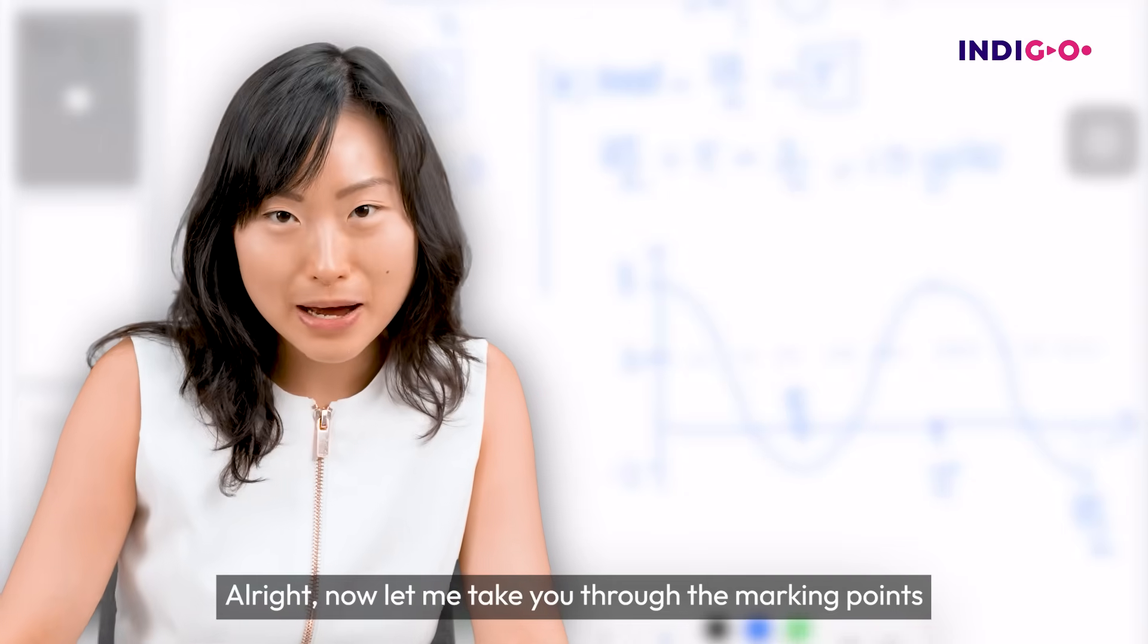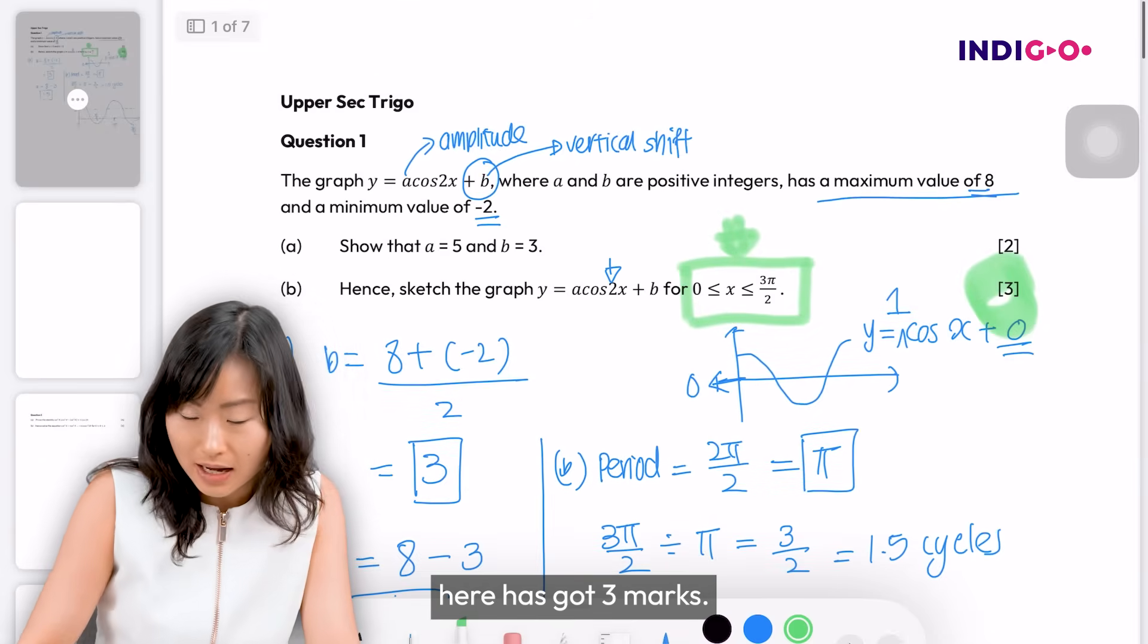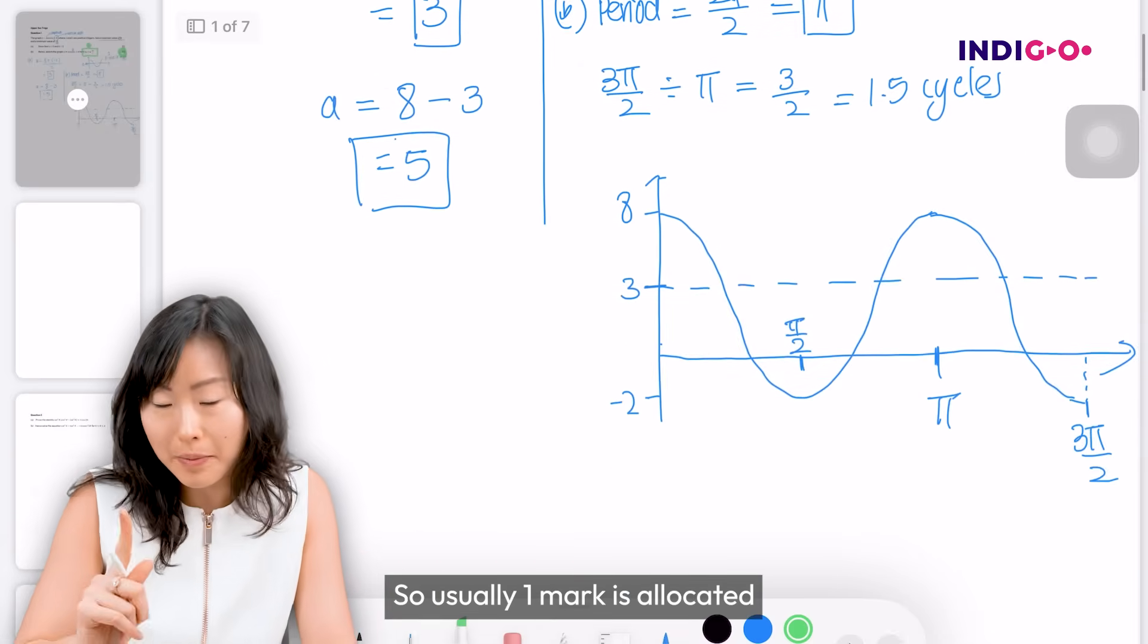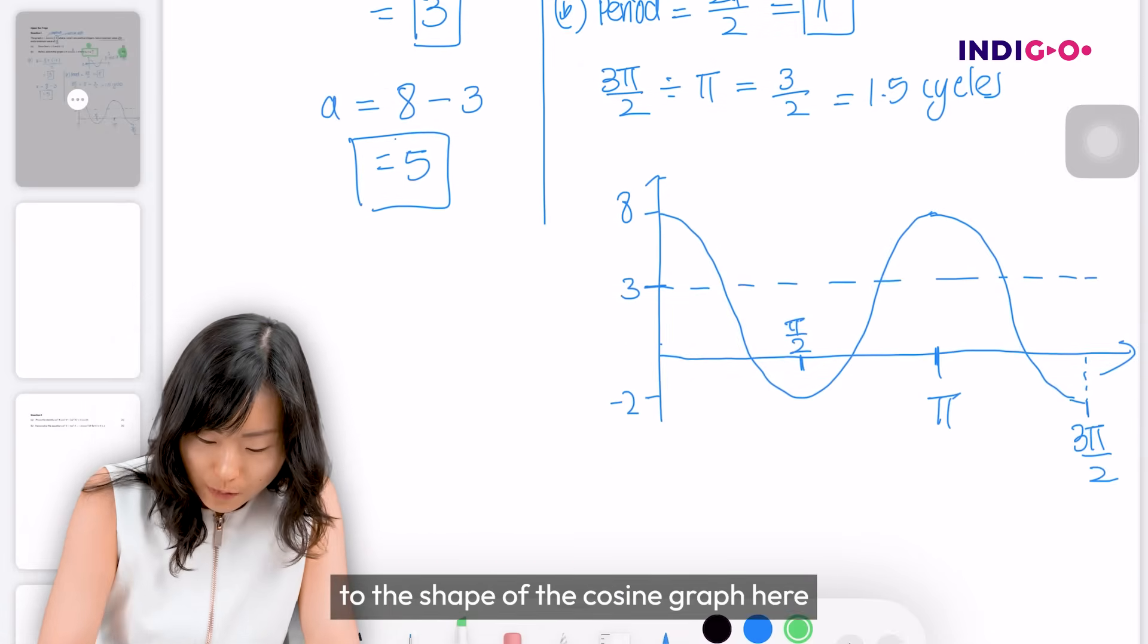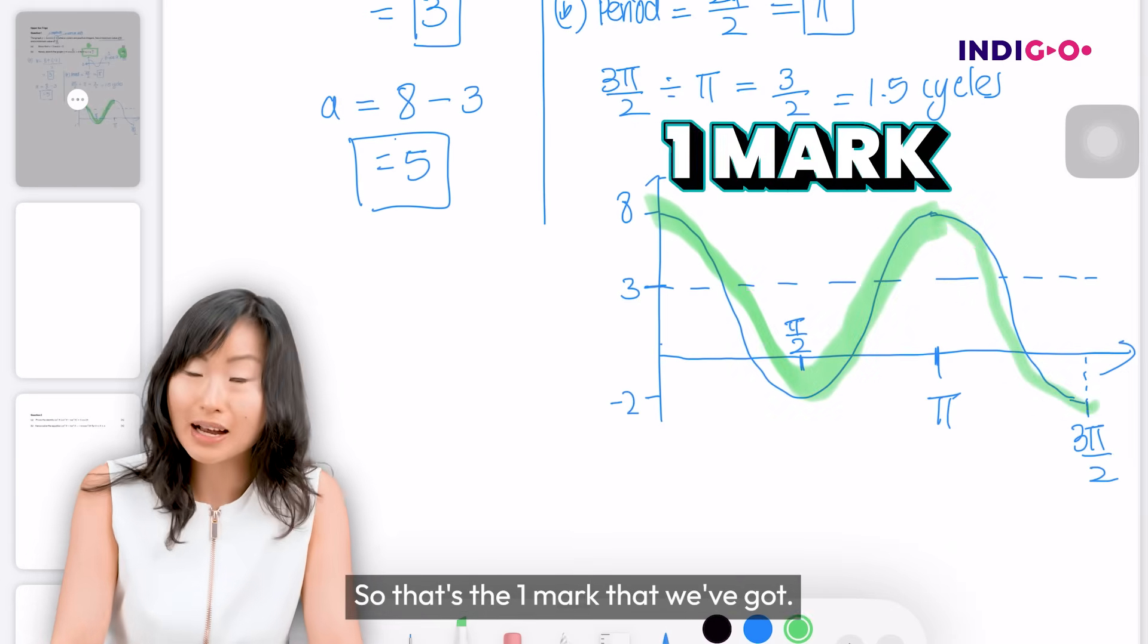Alright, now let me take you through the marking points for this question. You realize this question here has 3 marks. Usually 1 mark is allocated to the shape of the cosine graph here. And then you've got 1.5 cycles. So that's the 1 mark we've got.